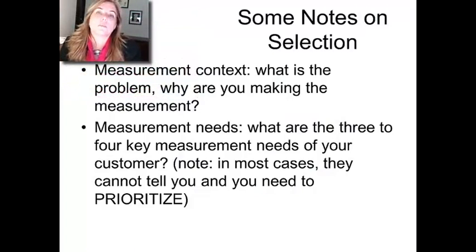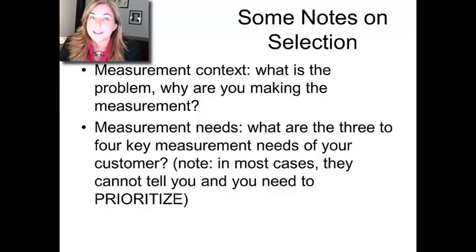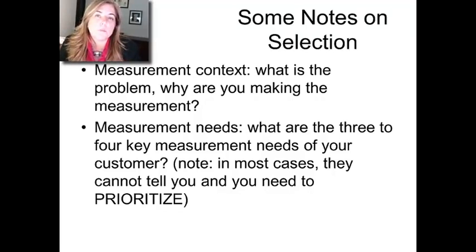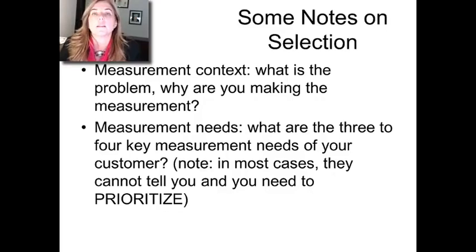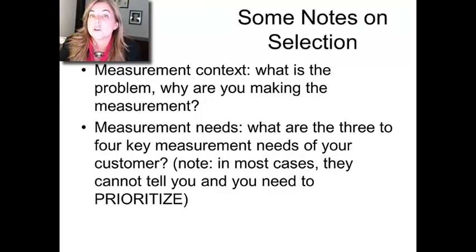Some notes on this process of selection. The key things you're trying to achieve is to get some clarity by doing the reading of what's the measurement context. What's really the problem that your customer has? Why are they making the measurement or asking you to make the measurement? The more you understand about the context, even if it doesn't seem to be directly relevant to the analysis, the better you're going to be able to make the right measurement.